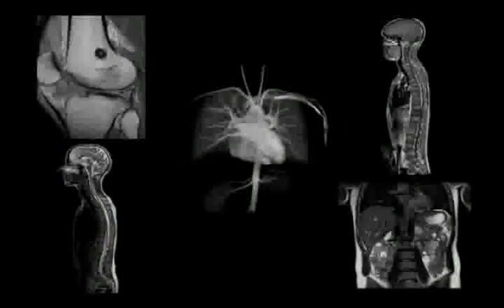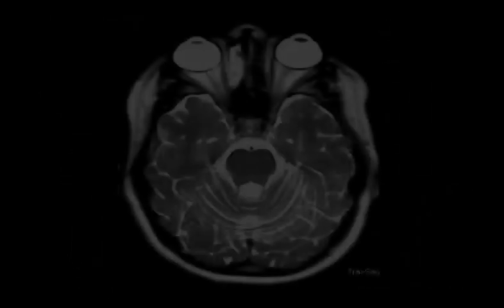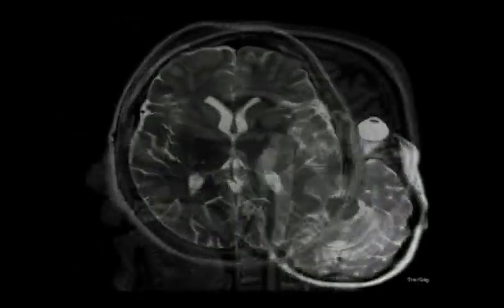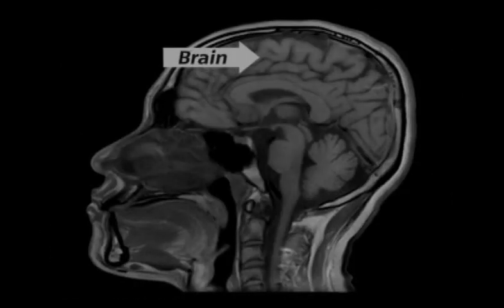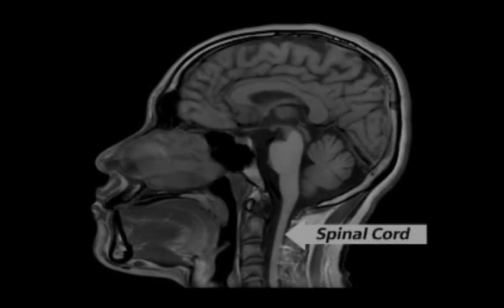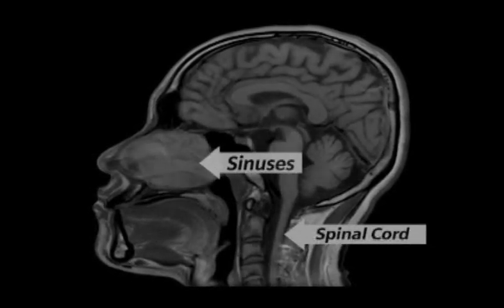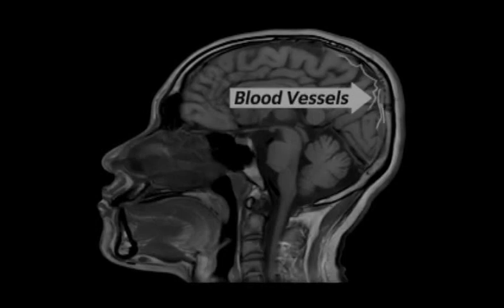You'll see some of the remarkable images produced by this type of medical imaging exam. These are MR images of the brain — they're astoundingly clear and detailed. In addition to the brain, we can see the spinal cord, sinuses, teeth, and even the blood vessels.